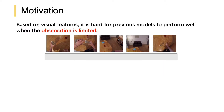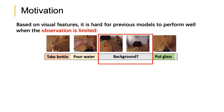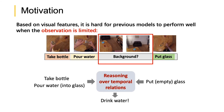in this example, it is easy to find observable take bottle, pour water, and put glass actions, but hard to know the middle action. We humans use reasoning over temporal relations to determine this action to be drink water.